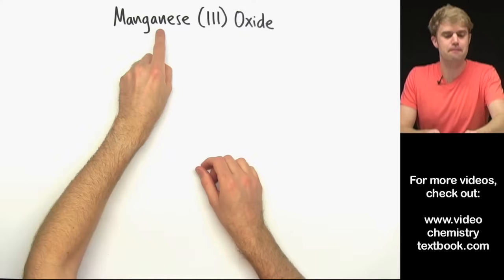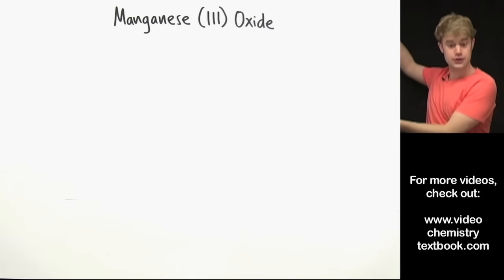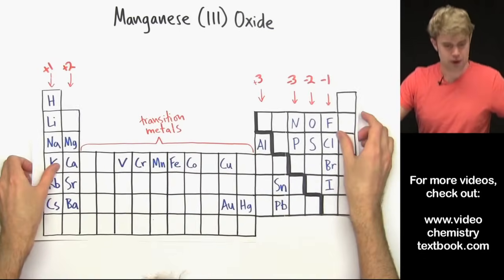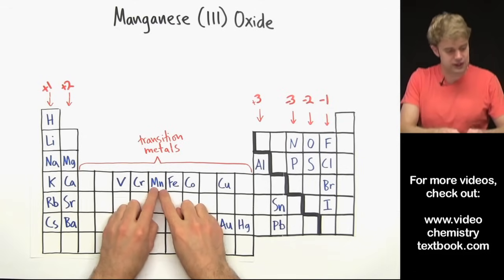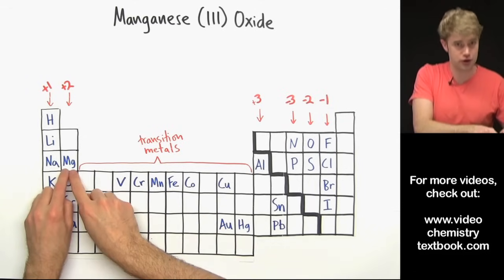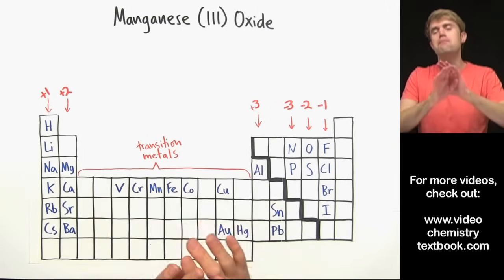Now let's write a formula for manganese 3 oxide. First thing we'll do is figure out the charges on the ions. So manganese here is a transition metal. Don't confuse manganese with magnesium which is not a transition metal. So manganese is an element that can make many different ions.